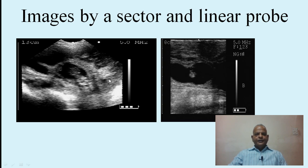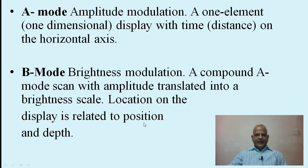The image shape can tell you which type of probe was used: a pie-diagram shaped image is formed by a sector probe, and a square or rectangular image is formed by a linear probe. A-mode amplitude modulation is still used in pigs but not in other animals — it is a one-element, one-dimensional display with time on the horizontal axis. B-mode or brightness modulation is a compound A-mode scan with amplitude translated into a brightness scale, where location on the display is related to position and depth.